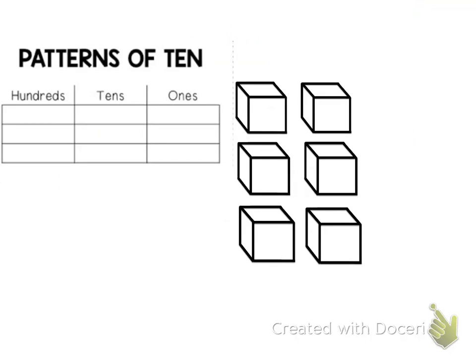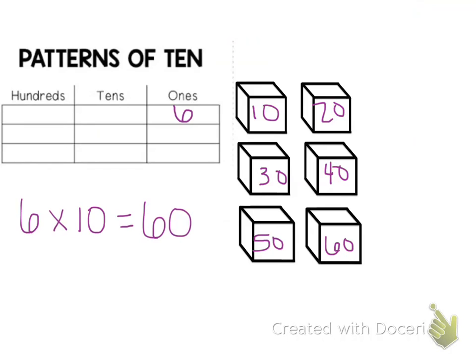Here I've got some place value blocks showing the number 6, so I'm going to fill in 6 in my place value chart in the ones place. Let's multiply 6 times 10. I can count by tens: 10, 20, 30, 40, 50, 60, to find out that 6 times 10 equals 60.